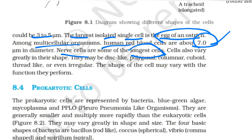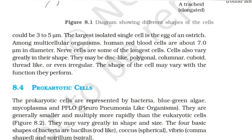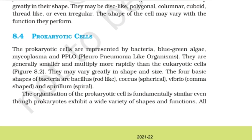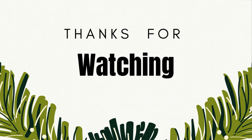We also have different cell shapes like disc-like structure, polygonal, columnar, and cuboid structures. This concludes the overview of the prokaryotic cell, to be continued in the next video. If you like, share and subscribe to the channel. Thanks for watching. Thank you very much.